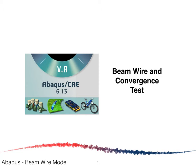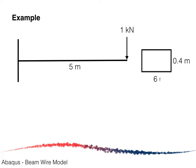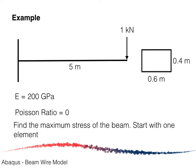For this tutorial we are going to consider a beam wire and a convergence test. We consider a cantilever beam 5 meters long with a 1 kilonewton load applied at the free end. The cross-section is rectangular with a depth of 0.4 meters and a width of 0.6 meters. The Young's modulus is 200 gigapascal and Poisson's ratio is 0. We are going to find the maximum stress of the beam.